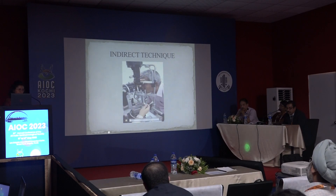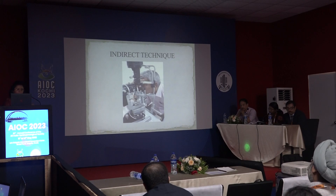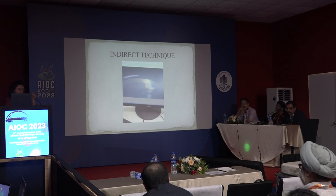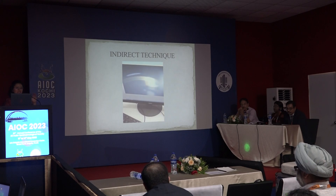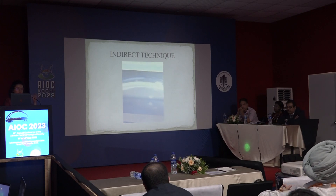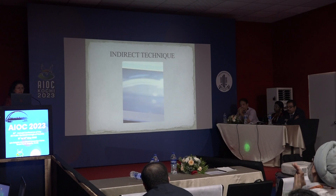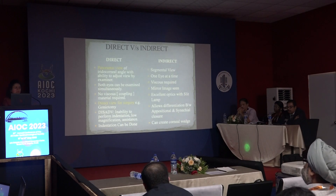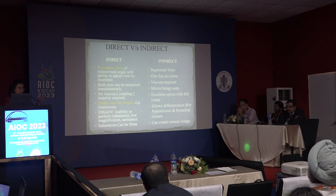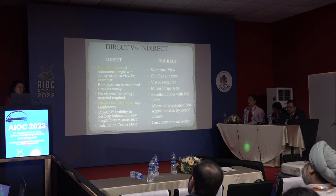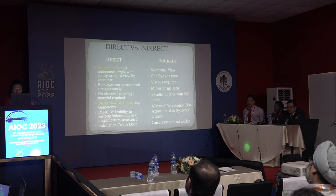For the indirect technique — the normal gonioscopy done with a Goldman mirror — after putting a coupling agent and anesthetizing the eye, we place the gonioscope and make a thin slit beam. Gonioscopy is a semi-dark room procedure; it should be done in a dimly lit room because any wide light will cause the pupil to constrict and falsely open the angles. The direct gonioscope gives a more panoramic view and directly shows the angle during surgery, while indirect gonioscopes are used on an outpatient basis for clinical diagnosis of open and closed angle glaucoma.